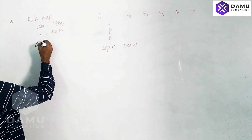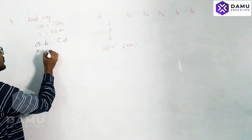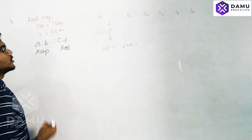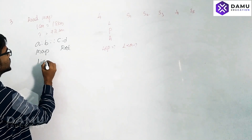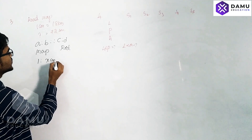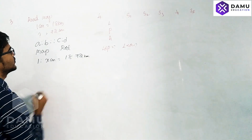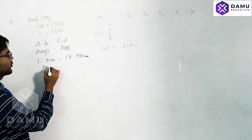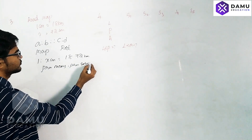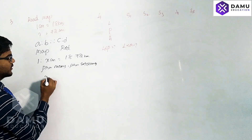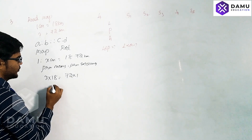We set up a proportion: a is to b as c is to d. On the map, one centimeter is to x centimeters, which equals 18 kilometers to 72 kilometers. Using the product of means and product of extremes: x into 18 equals 72 into 1.